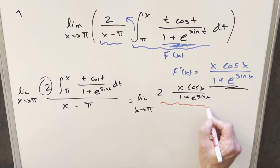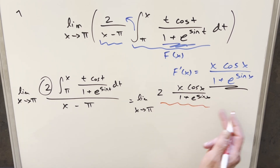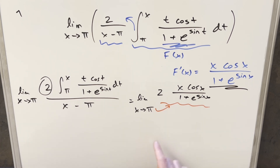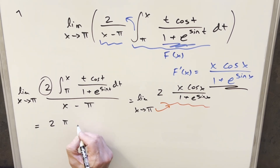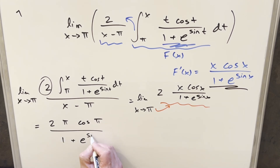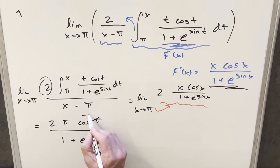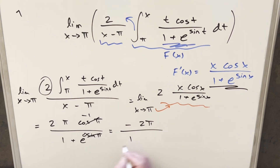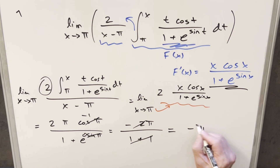This expression is no longer an indeterminate form — no zeros or infinities — so we can just plug in pi. Evaluating at x equals pi: we get 2 times pi times cosine pi over 1 plus e to the sine pi. Cosine of pi is minus 1 and sine of pi is 0, so this becomes minus 2 pi over 1 plus e to the 0, which is 1 plus 1 equals 2. The 2s cancel, giving a final answer of minus pi.